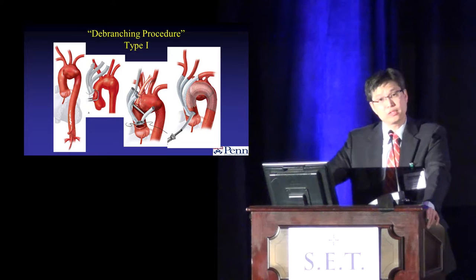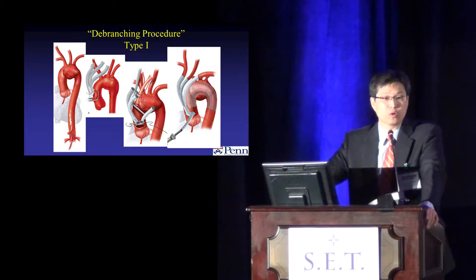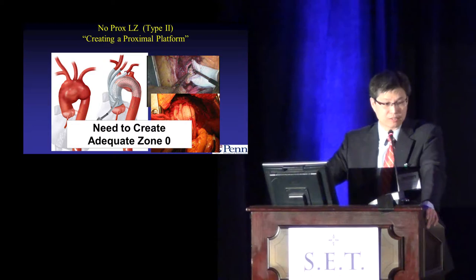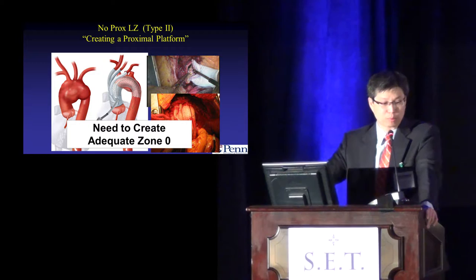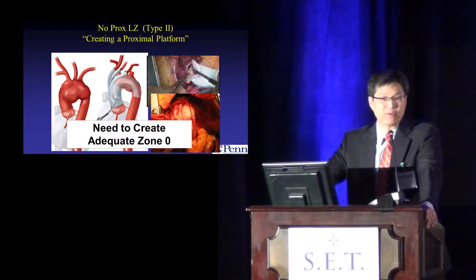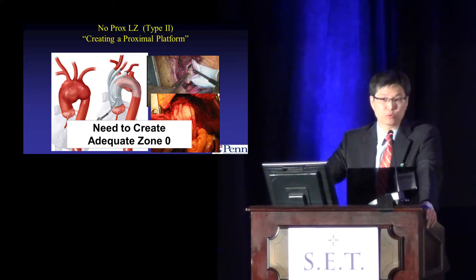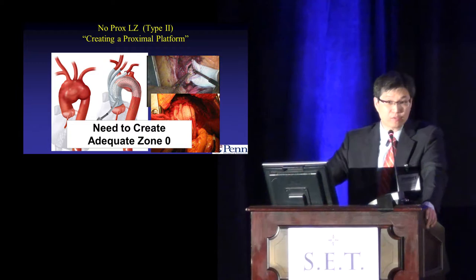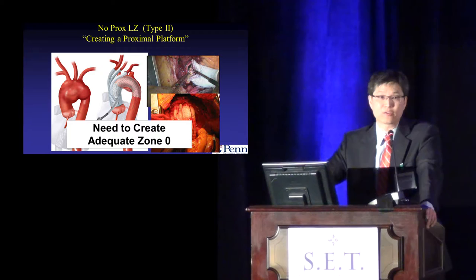In the event the ascending or proximal aorta has aneurysmal disease, you need to create a proximal landing zone for this technique to apply — so-called Type 2, creating a proximal platform in a brief circulatory arrest fashion. This is more extensive open surgery, but you can create a platform, revascularize your head vessels, and give yourself a zone zero so that you can come back and deploy a stent graft concomitantly or staged. This provides a very robust proximal landing zone that is reproducible, allowing you to choose the graft size to fit your distal landing zone and treatment strategy.